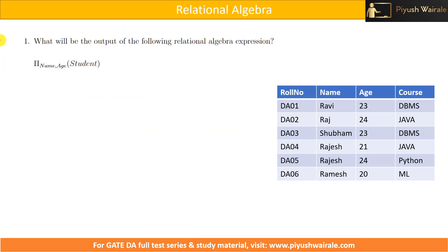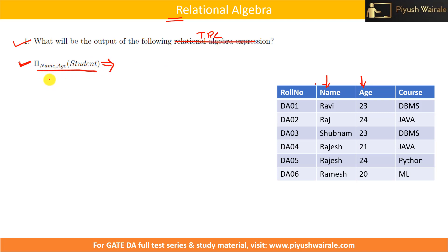Now let us solve a few examples. This is the same question we discussed in Relational Algebra, but we will write the equivalent TRC expression. Here we are projecting name and age from the student table — that's it. Such questions can appear in exams, like 'write the equivalent TRC query for a given Relational Algebra expression.' So we need to know how to convert Relational Algebra to TRC form.